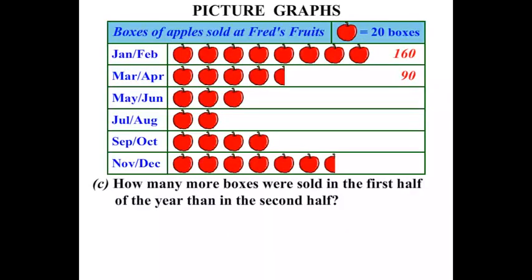How many more boxes were sold in the first half of the year than in the second half? Let's work out the rest of the periods first. In May-June, each apple is 20 boxes: 20, 40, 60 — let's write that down. In July-August: 20, 40 — so let's write 40 down.